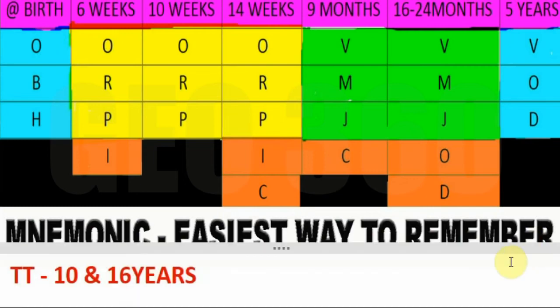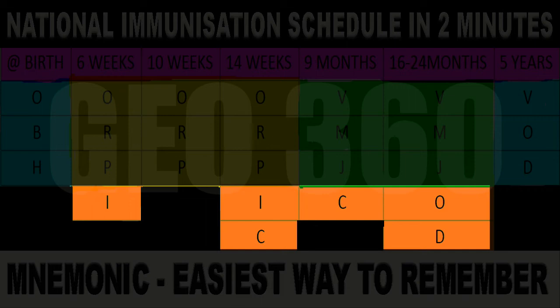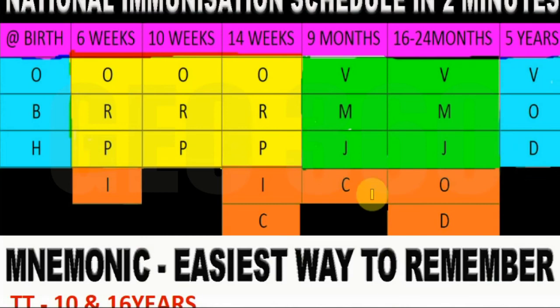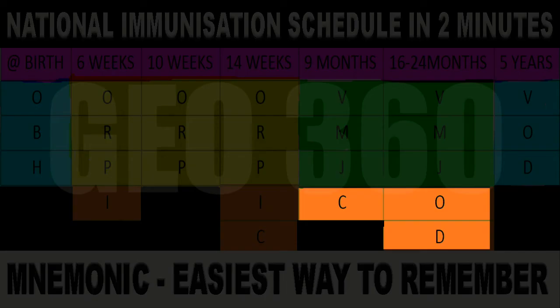Additionally, TT vaccine must be given at 10 and 16 years respectively. There are also 2 or 3 additional vaccines for which I couldn't find a proper mnemonic — if you find one, suggest it in the comment box. The mnemonic I've framed for those additional vaccines is COD — cash on delivery. At 9 months, C stands for conjugate pneumococcal vaccine. O is for oral polio vaccine and D is for DPT vaccine, covering the 9 months and 16 to 24 months rural schedule.